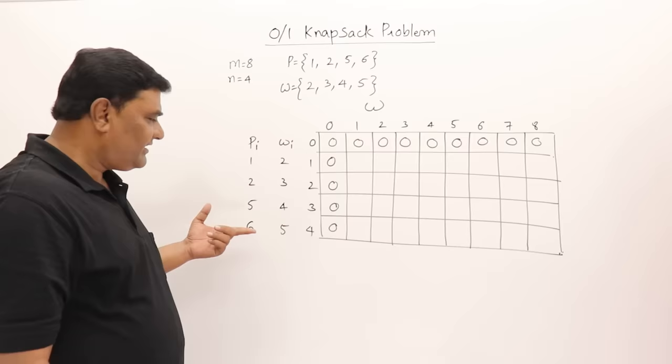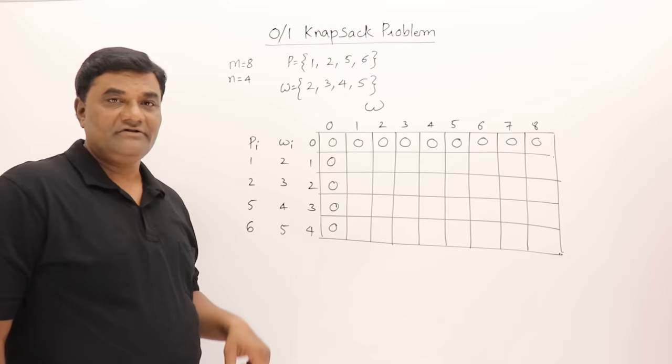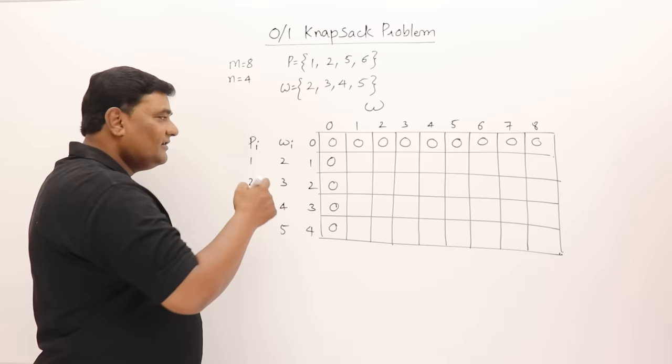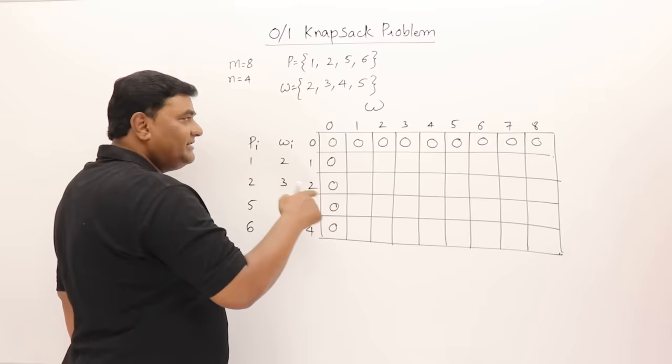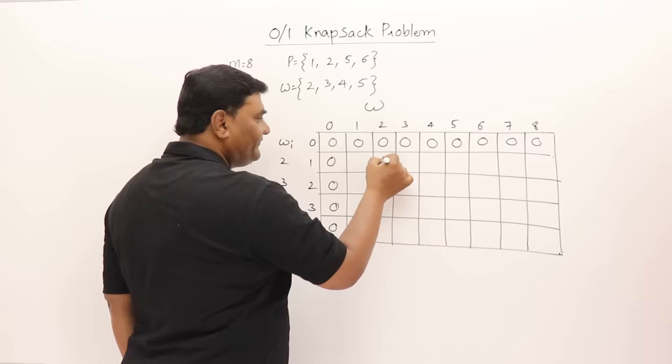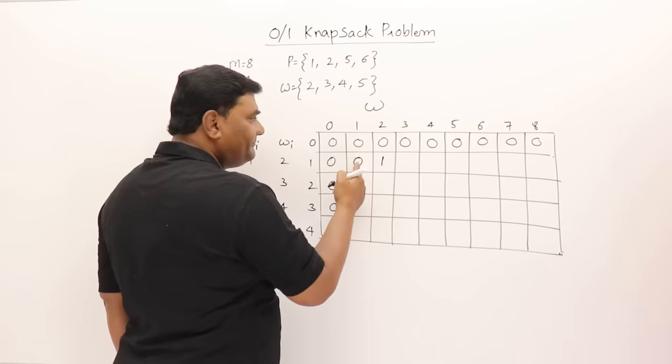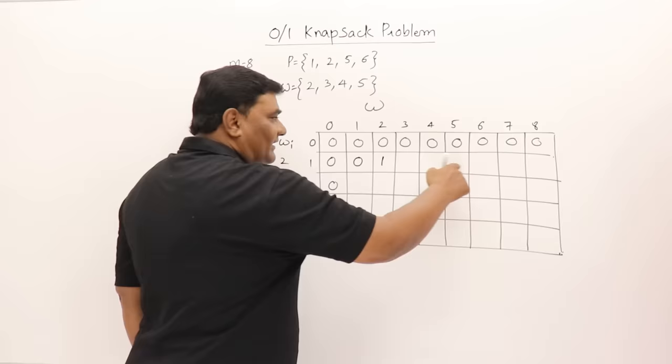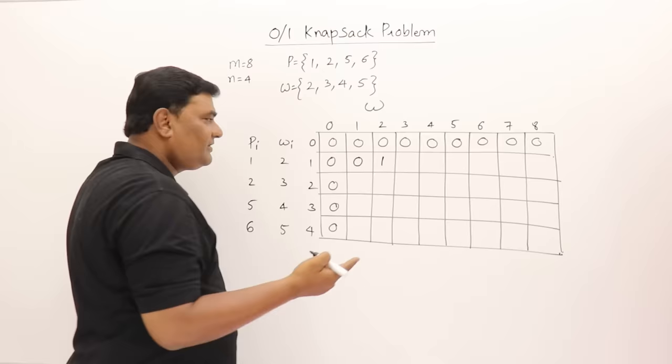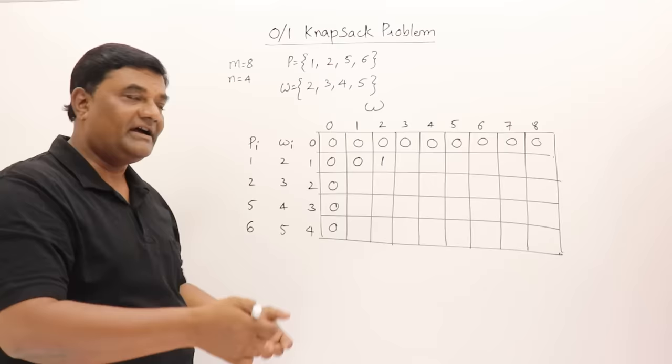When in the i-th row, we also consider all objects from previous rows. For the first row directly, the weight of the first object is 2, so it can be filled only when bag capacity is 2 — profit is 1. Then for remaining cells the capacity increases but we are only considering one object, so we keep filling 1 for all cells beyond that.